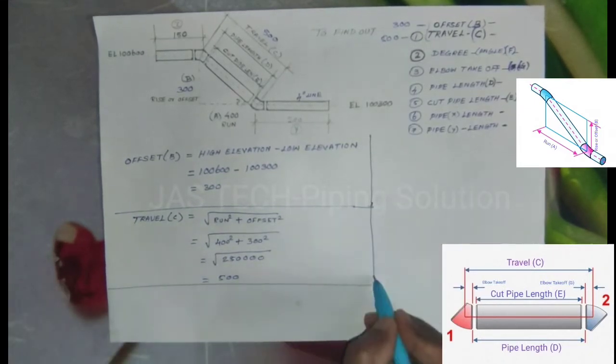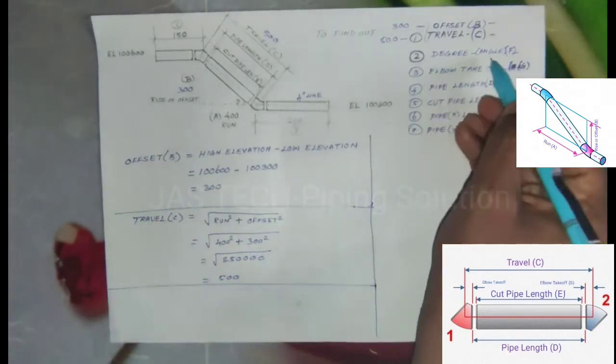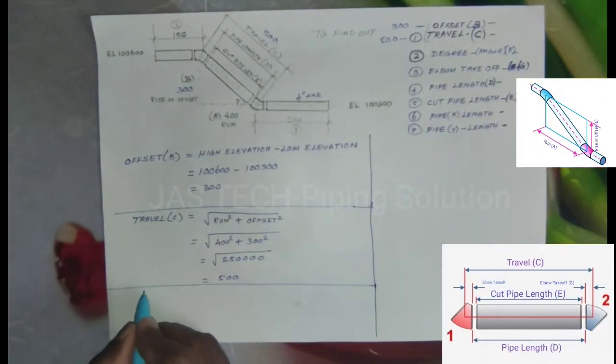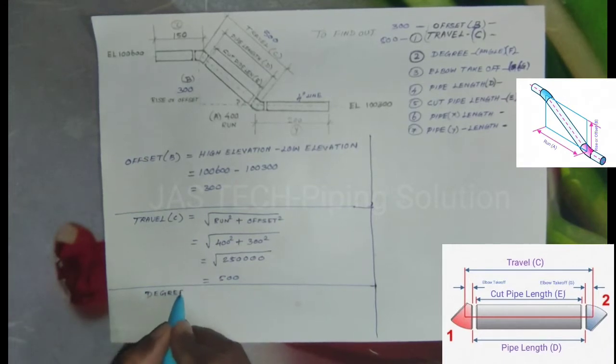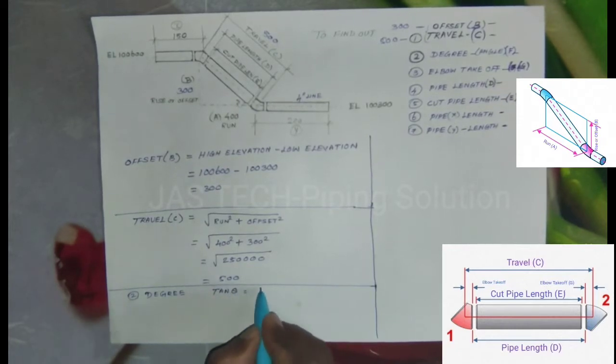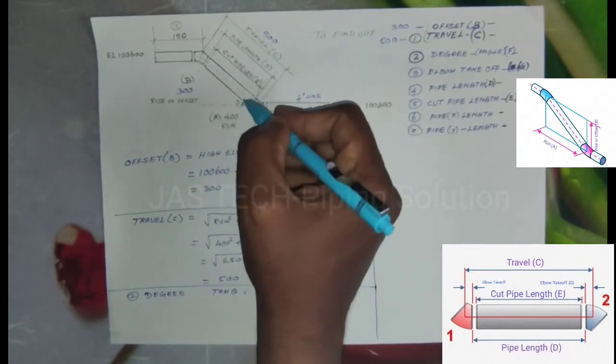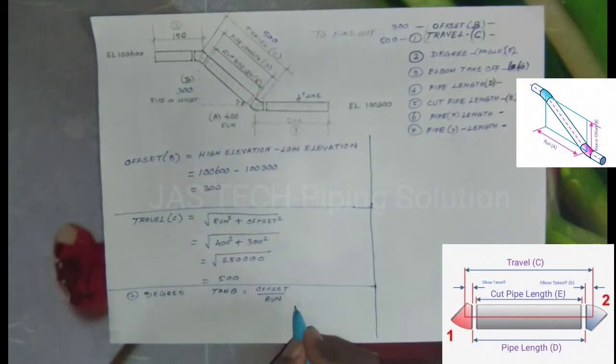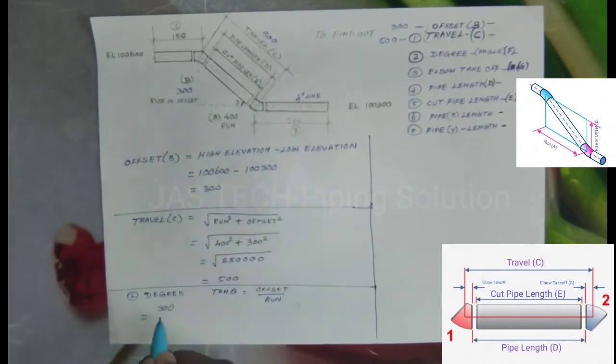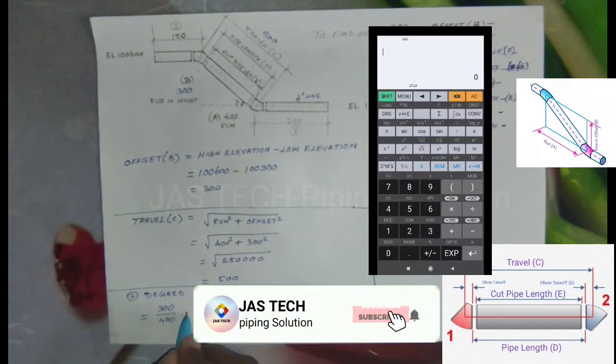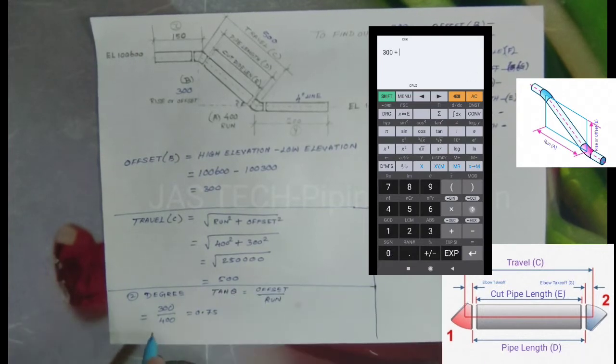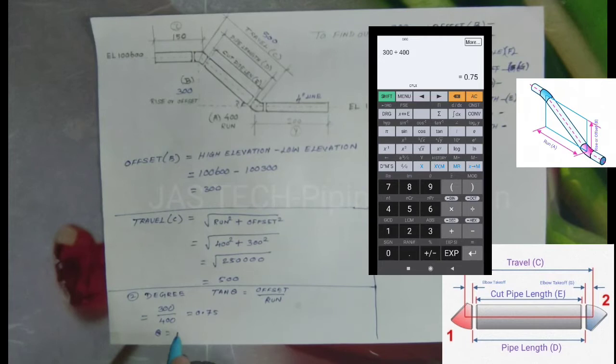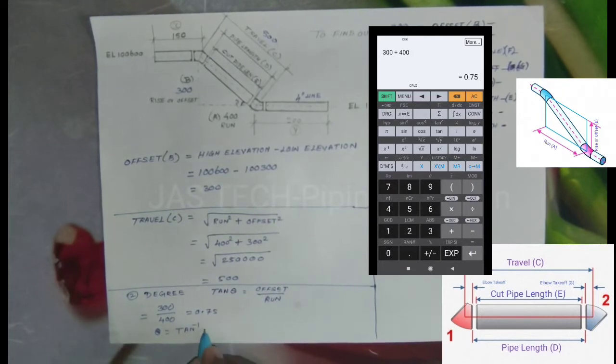Next one, to find out Degree F. The formula is tan theta equals Offset by Run, or opposite side by adjacent side. Offset 300 divided by Run 400 gives result 0.75. Theta equals tan inverse of 0.75.